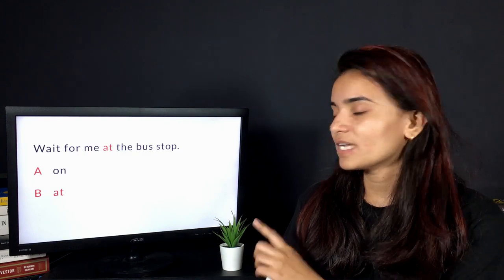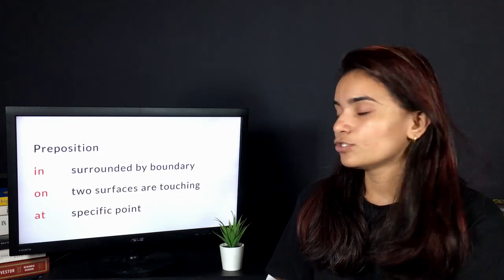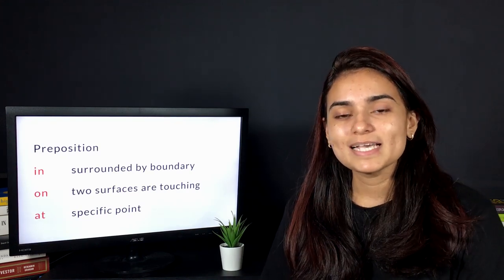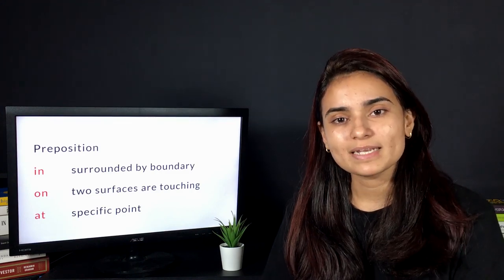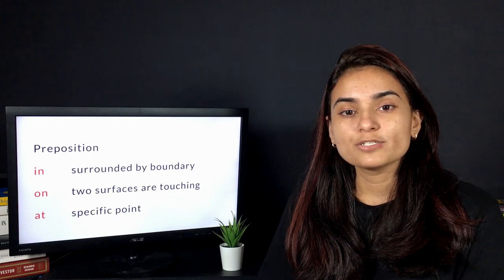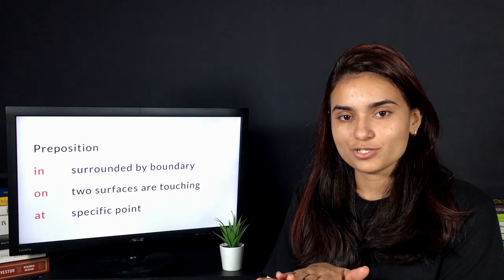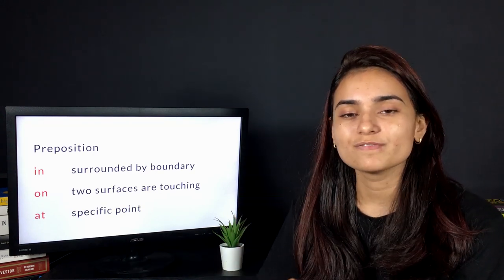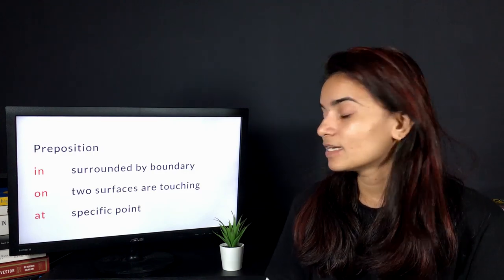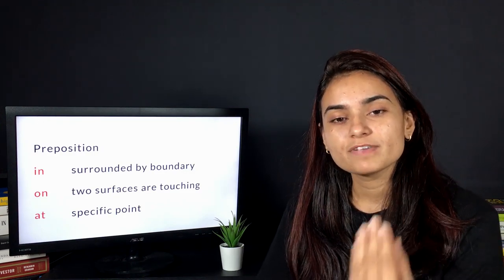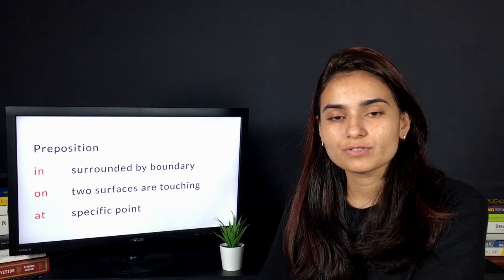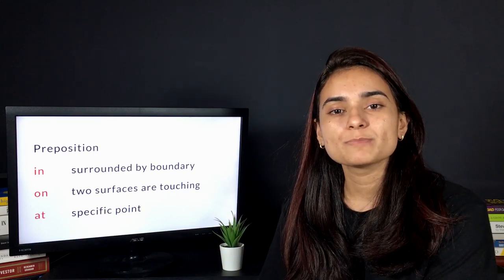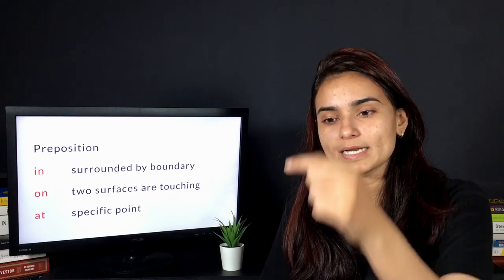From these two options, we have picked 'at' because 'in' is used when you talk about an object surrounded by a boundary. For example, I stand in the garden. 'On' is used when two surfaces are touching each other, like my finger is on my hand. Then you have 'at' when you want to talk about a specific point—it can be with respect to time or place. So you say 'I'm standing at the bus stop.' Bus stop is your specific point and you want to indicate that I'm standing right there.